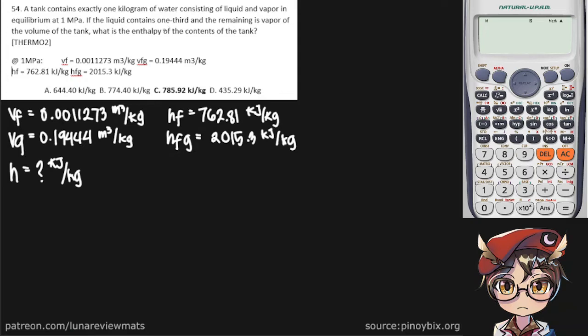And if we interpret this, if we let V sub tank be the volume of the tank, that means volume of the liquid is equal to a third of the volume of the tank and the remaining is vapor of the volume of the tank. So the vapor was occupying two-thirds of the volume of the tank.